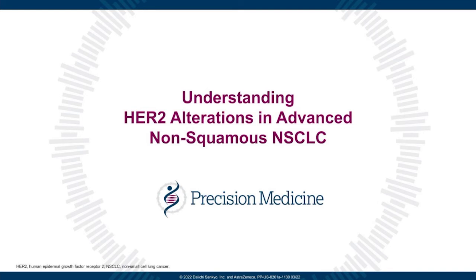Now, as promised, I'll introduce our featured speaker. Dr. Fred Hirsch is an M.D. and a Ph.D. — he received both of those advanced degrees in Copenhagen, Denmark. He's currently the Executive Director of the Center for Thoracic Oncology and Professor of Medicine and Pathology. He's the Joe Lowe and Louis Price Professor of Medicine and the Associate Director of the Tisch Cancer Institute at Mount Sinai, all within the Icahn School of Medicine. We could have no more distinguished expert on non-small cell lung cancer. Dr. Hirsch, please go ahead and begin your lecture.